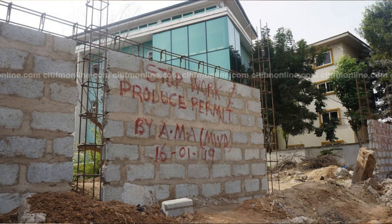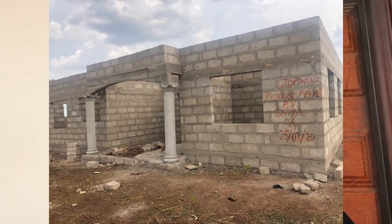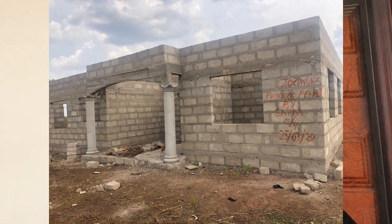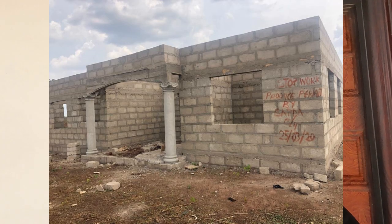You will see certain buildings that have 'Stop Work' written on them in red paint — meaning these people have not gone to the assembly.